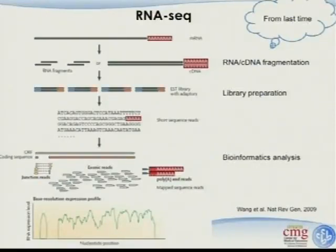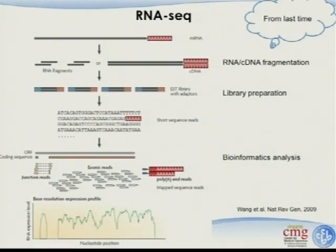I want to first review the RNA sequencing part. Today is the third lecture. The first slide shows the RNA sequencing general pipeline. This is messenger RNA, and the first step is RNA or cDNA fragmentation. It depends on where your reverse transcription happens — if you do the reverse transcription first, you'll do the cDNA fragmentation. The key point is that sequencers only work on DNA.